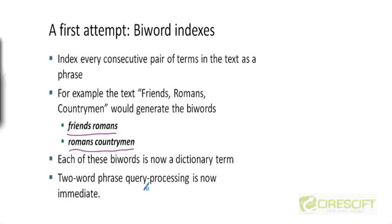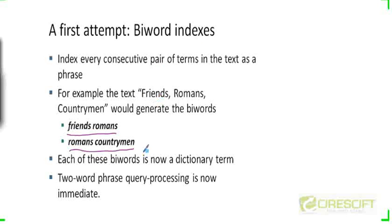You can see how to handle phrase queries. They can be immediately answered because a phrase query like Stanford University is going to directly map to an entry in the biword index corresponding to that phrase, Stanford University. So the list of documents in that postings list are going to be documents which contained Stanford right before the word university.